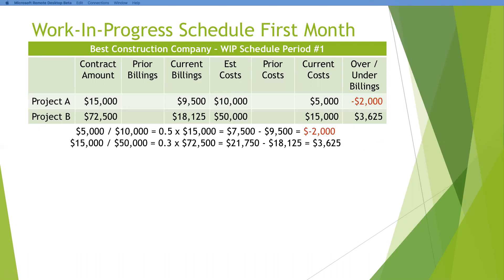Let's do the same math on the second line. We take our actuals, divide by our estimated costs, and come up with 30% complete. We multiply it by what the overall contract was going to be. Even though we only billed $18,125, in the perfect world we would have billed $21,750 — so we've underbilled that one by $3,625. There are sometimes legitimate reasons why we may overbill for mobilization purposes and things like that. But this is just scratching the surface of how these numbers play out when we're putting financial statements together. We'll use that percentage of completion to say what we were over and under billed.